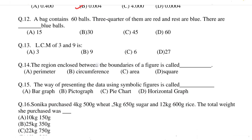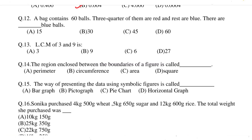Question 12: a bag contains 60 balls. Three quarters of them are red and the rest are blue. There are dash blue balls. The correct option is option A, 15. Question 13: LCM of 3 and 9 is? The correct option is option B, 9. Question 14: the region enclosed between the boundary of a figure is called dash. The correct option is option C, area. Question 15: the way of presenting data using symbolic figures is called dash. The correct option is option B, pictograph.